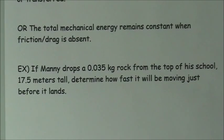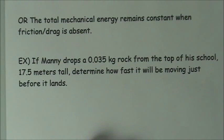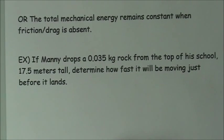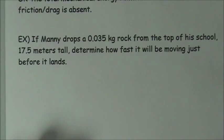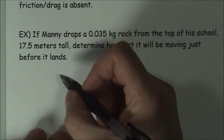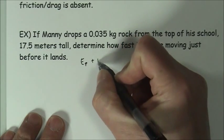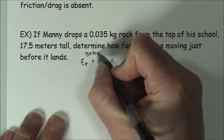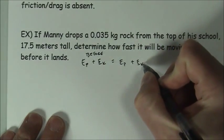In this example, Manny drops a 0.035 kilogram rock from the top of his school, which is 17.5 meters tall. And the question that we want to answer is how fast it will be moving just before it lands. In order to do that, we're going to use this idea that the total mechanical energy, or that this object will follow conservation of energy. And so we would say that EP plus EK before must be equal to the total potential plus kinetic after.